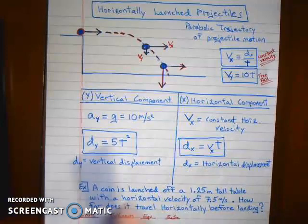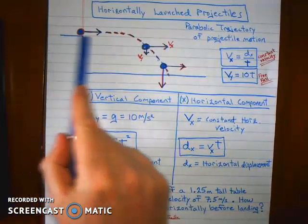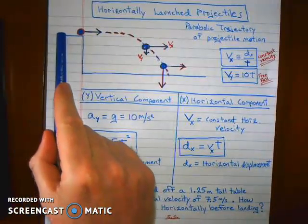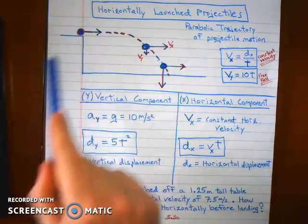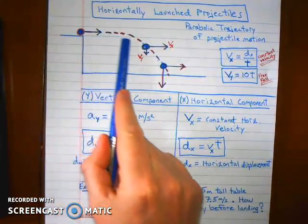All right, so you've been introduced to this. We shot some coins off of the edge of a table, and they were launched initially in the horizontal direction. That's the x component. And as they travel, they follow this parabolic trajectory.